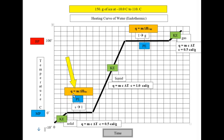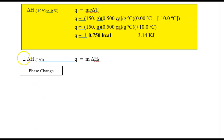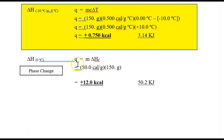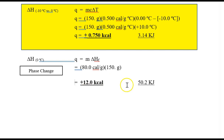Next, the melting point — the phase change from solid to liquid at zero degrees. Using q = m × heat of fusion: the heat of fusion of water is 80 cal/g, and the mass is 150 g, giving 12,000 calories, or 12 kilocalories. Converting by multiplying by 4.18 J/cal gives 50.2 kilojoules.